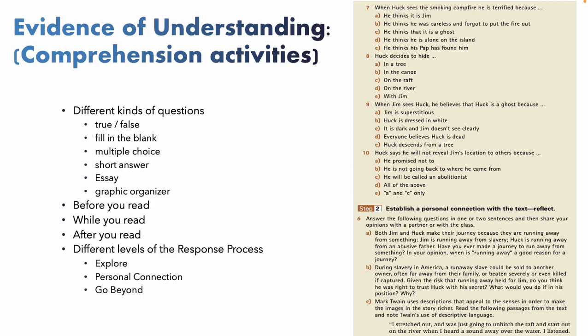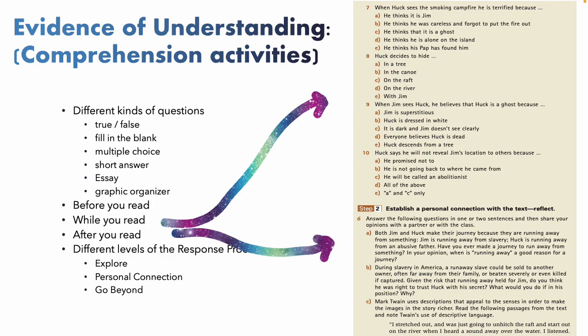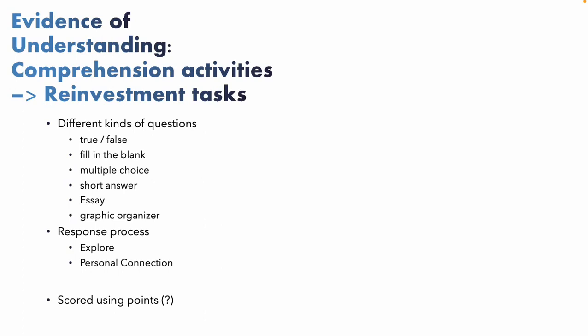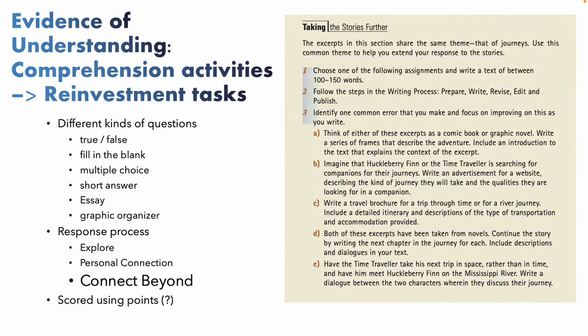After you read, we have multiple choice questions to explore the text, short answer questions to establish a personal connection, and students can share opinions with a partner. Then we ask them to connect beyond and explore those issues more deeply using ideas from the text. Here you'll see this is less about comparing with a partner — less competency one — and more about writing and responding, so competency two working through competency three as they connect beyond.